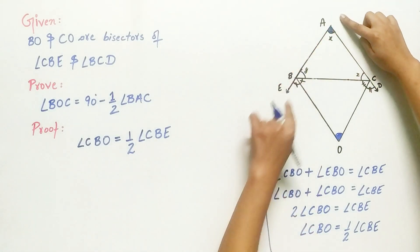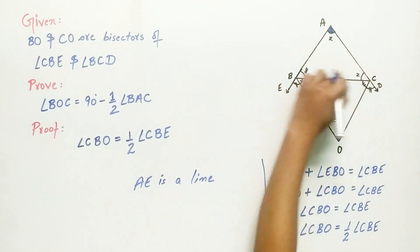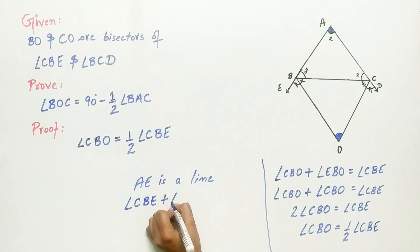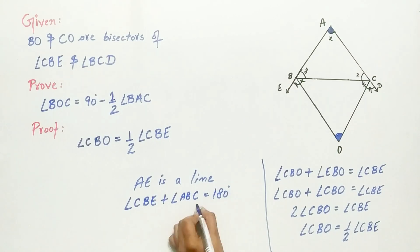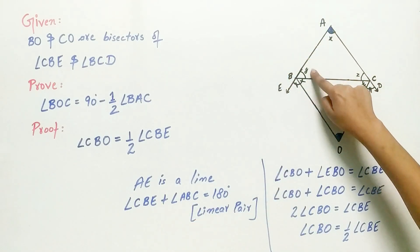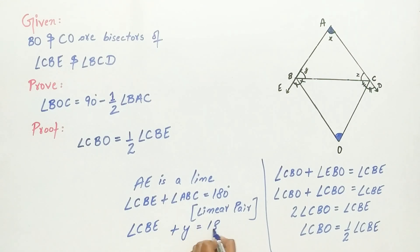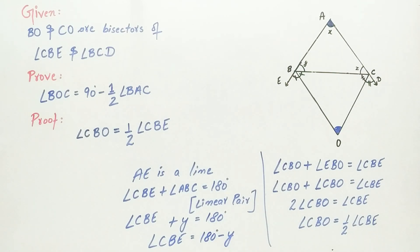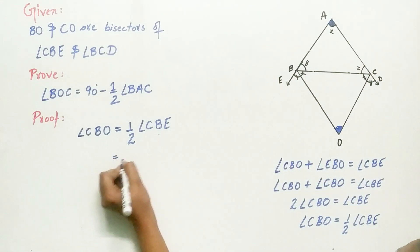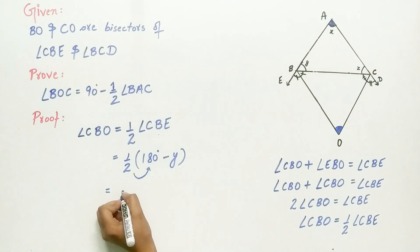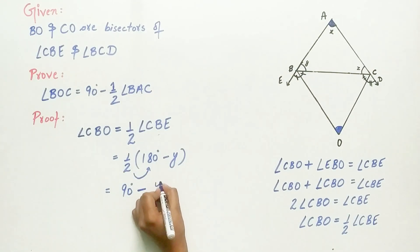Now look carefully — AE is a straight line. Hence, angle CBE plus angle ABC equals 180 degrees because of the linear pair. Let angle ABC equal Y. So angle CBE equals 180 degrees minus Y. Substituting into the equation: angle CBO equals half of (180° − Y), which gives 90 degrees minus Y by 2.